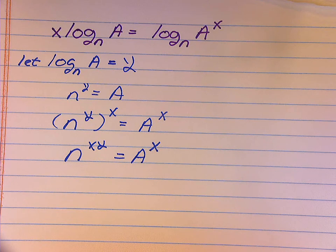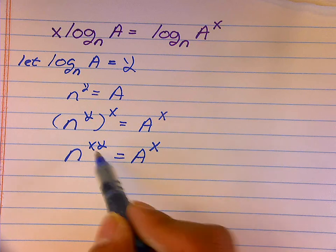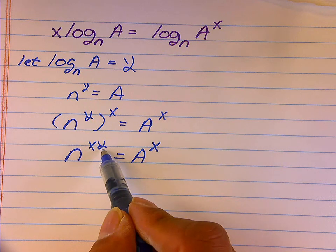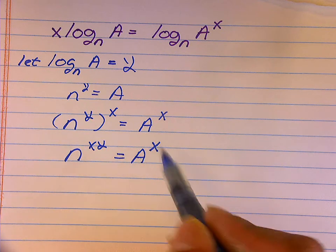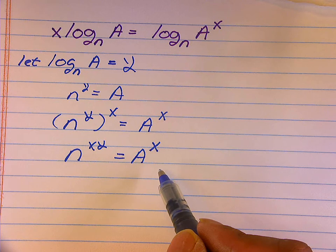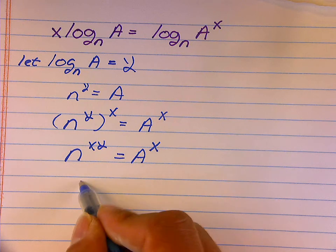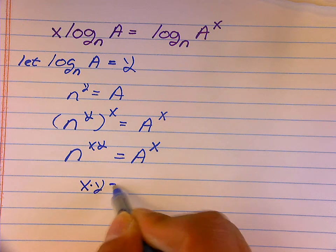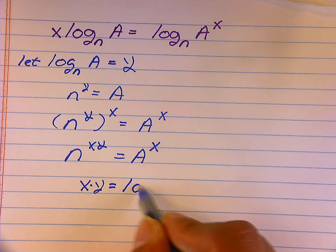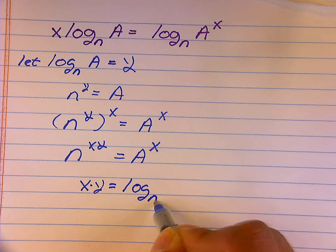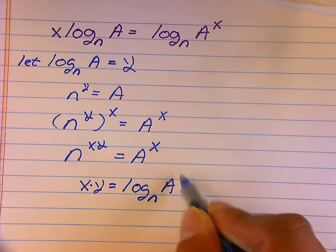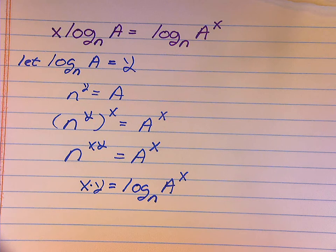At this point, I'm now going to rewrite these using the definition of a logarithm. Notice, x times y is the exponent I can put on an n to get A to the x. That is, x times y must be the log base n of A to the x.